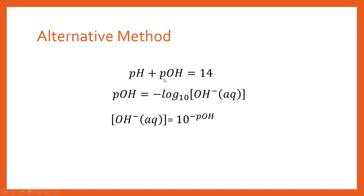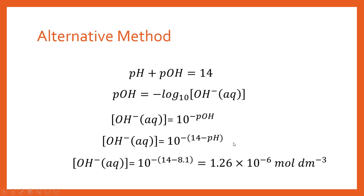We can rearrange this for pOH: pOH is simply going to be 14 minus the pH, which we can substitute in. So this is one expression that for a solution will get us straight to the answer. If you put a pH of 8.1 in there, you get the right answer straight away. Hopefully this video has been helpful — please subscribe and like the video so other people can discover this content. Thank you very much for watching.